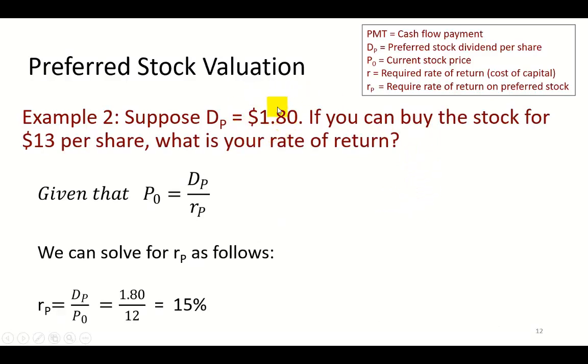now given the same dividend per share, suppose you're able to pay $13 per share to buy the stock. So from this present value of a perpetuity formula, we can solve for RP algebraically to come up with this, which is the ratio of the fixed dividend and the price that you've paid.